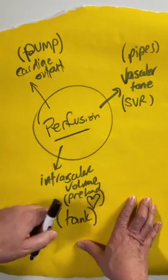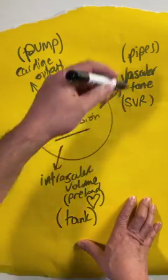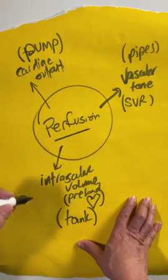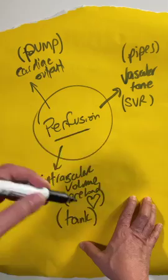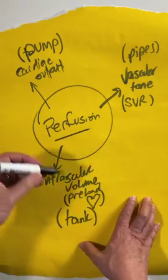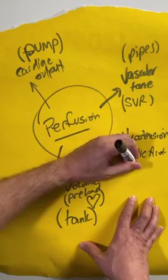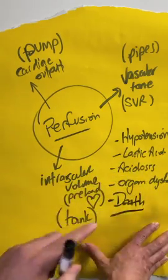Early on in shock, the other two or one thing that is normal will increase to compensate for the decrease in function of the other system. It's like these other two pick up the slack to compensate for the lack of perfusion, and that's what you see early on in shock. It's later on in the disease that you see the classic manifestations like hypotension, lactic acid production, acidosis, organ dysfunction, and of course death if not corrected quickly.